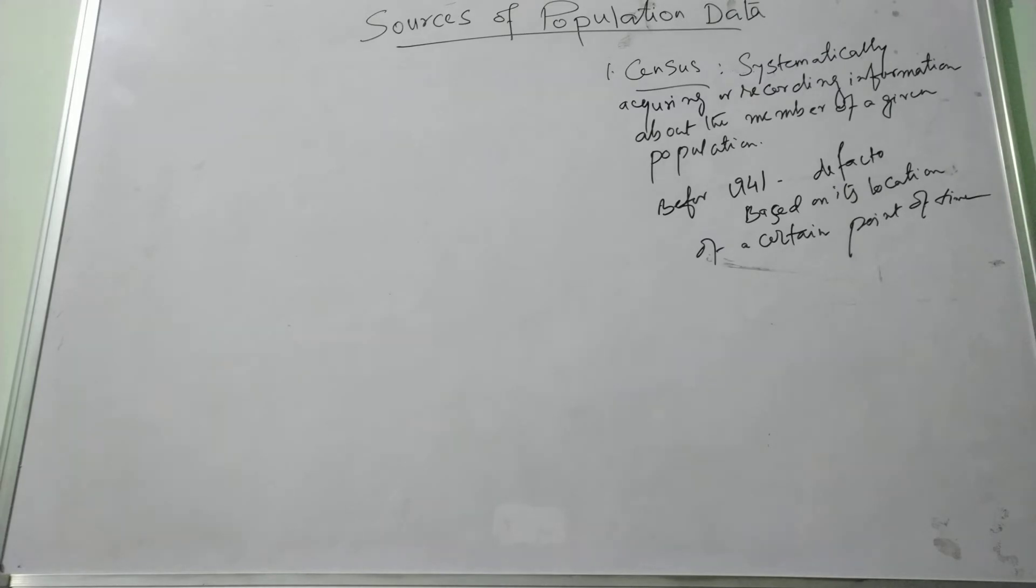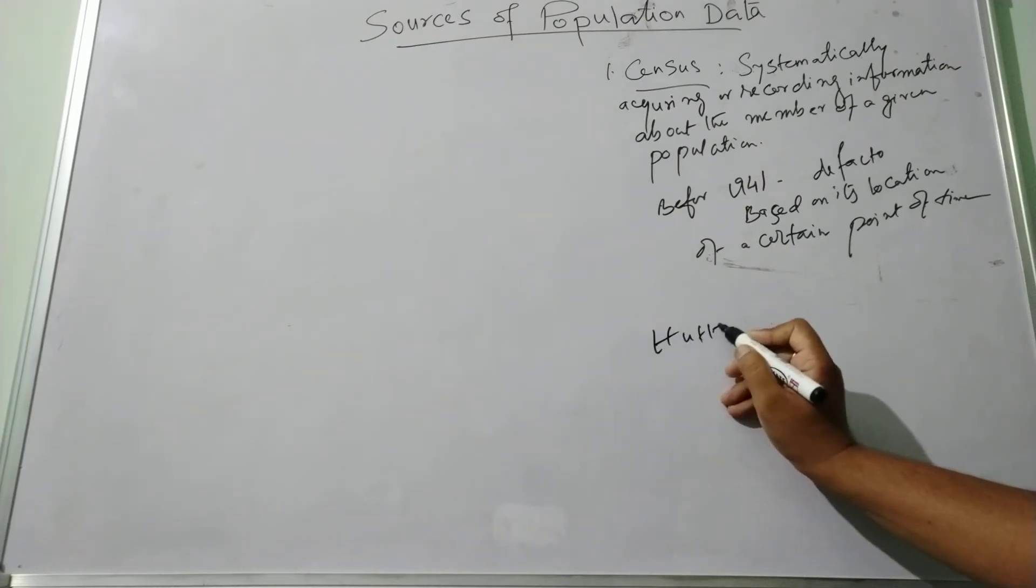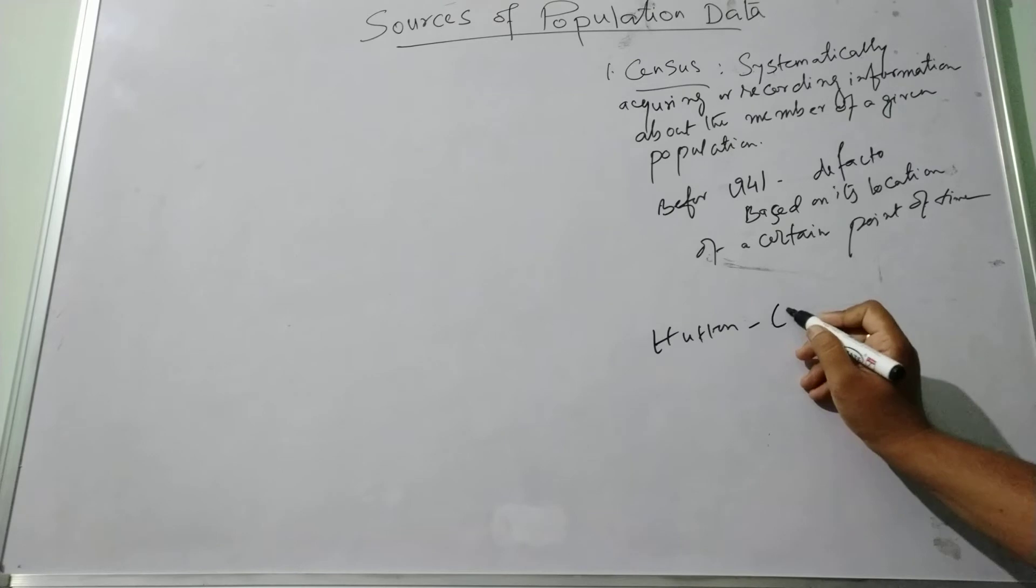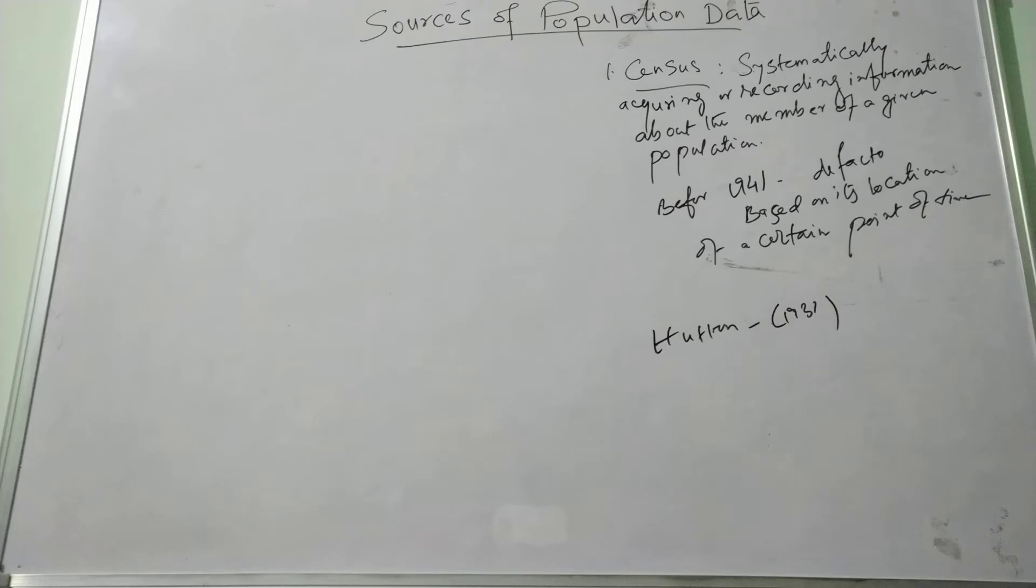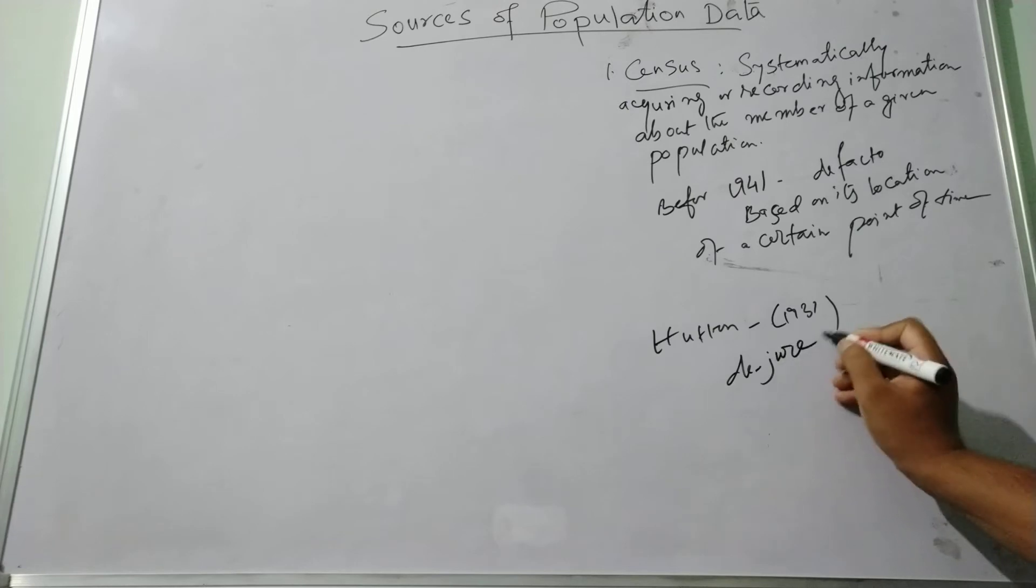The report, that is the census commissioners in 1931, has suggested a modification in the system of enumeration and suggested the de jure method.